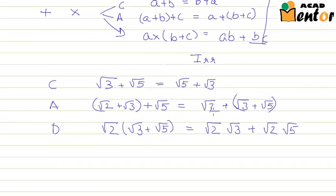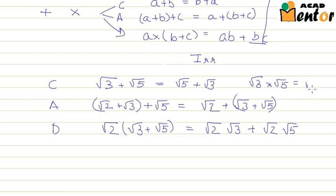The commutative and associative properties also hold for multiplication operations. That is, √3 multiplied by √5 would be the same as √5 multiplied by √3.